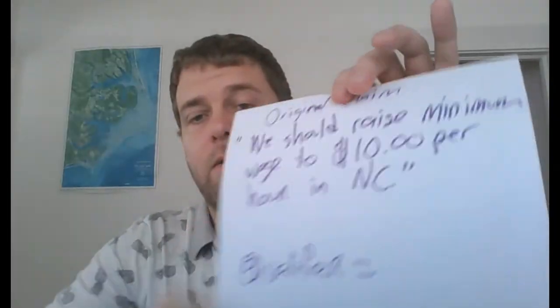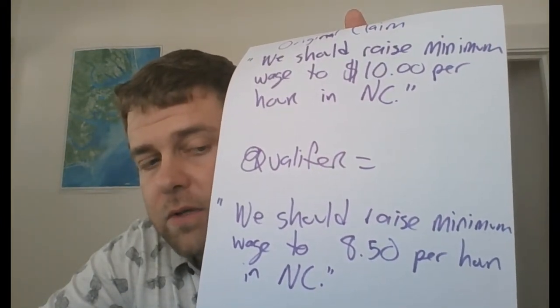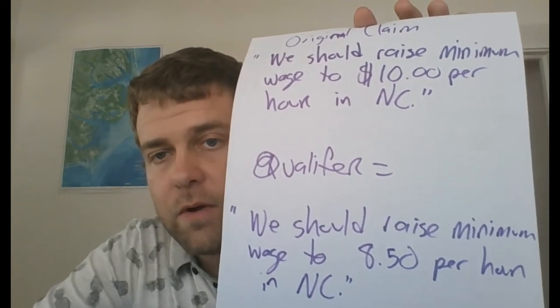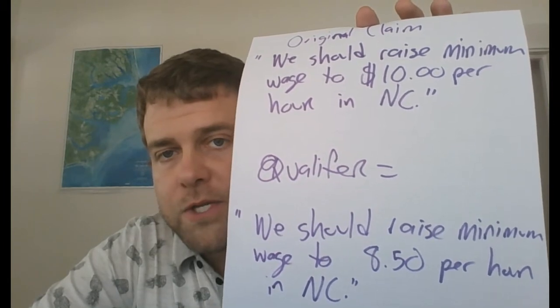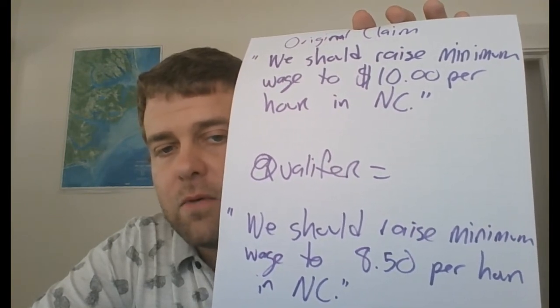Another example: the minimum wage in North Carolina should be raised from $7.25 to $10. I'm going to argue for raising it to $10. The other person says, 'That's unreasonable, we can't raise the minimum wage that much.' So you qualify what you originally said and say, 'What if we make it $8.50 per hour?' Original claim: raise it to $10. Qualifier: we should raise it to $8.50 per hour in North Carolina. Your original claim takes a hard stance, then you qualify it to make it more acceptable to your audience.